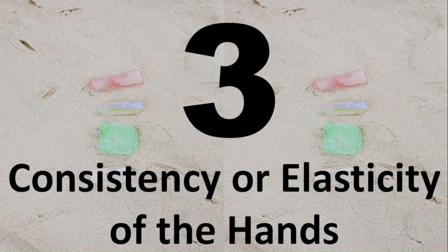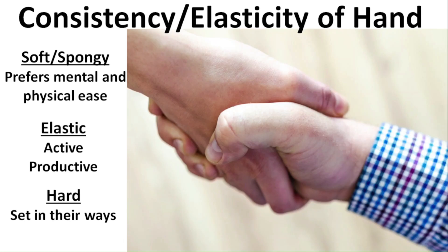Number three. Consistency or the elasticity of the hands can range from being so soft that when the hand is squeezed, it feels like the bones will come through the skin. On the opposite end, a hard hand feels like you're squeezing a piece of wood.